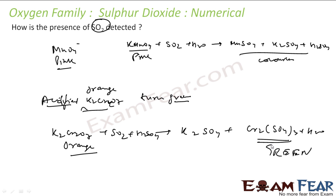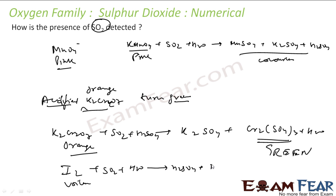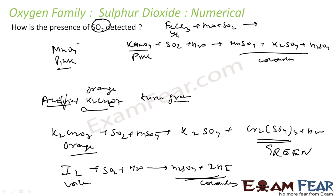There are many other tests. Iodine — which is violet in color — turns colorless when it reacts with SO2 and water to give H2SO4 and HI, which are colorless. FeCl3 (ferric chloride), which is yellow, reacts with water and SO2 to give FeCl2 (ferrous chloride), which is green.